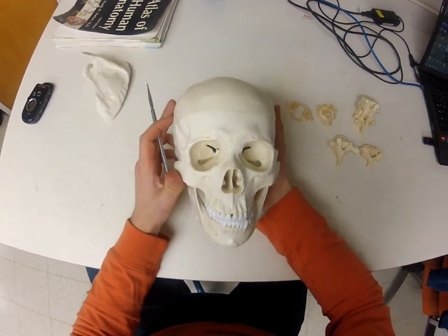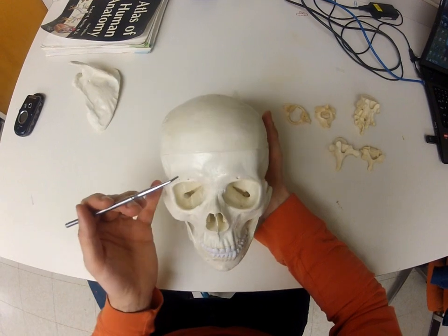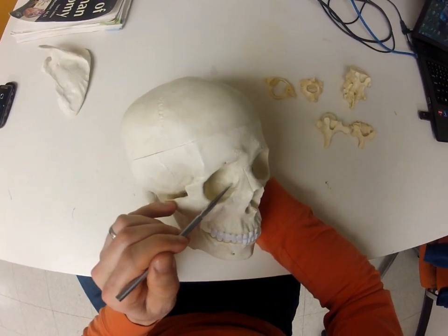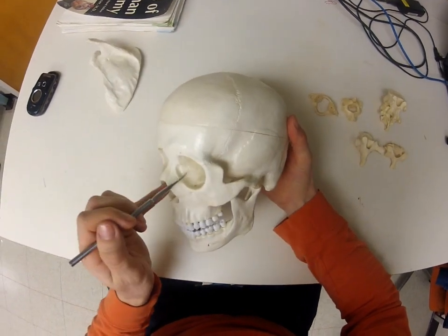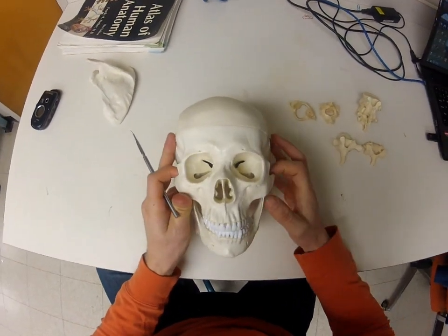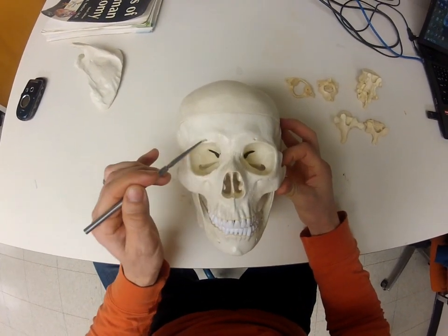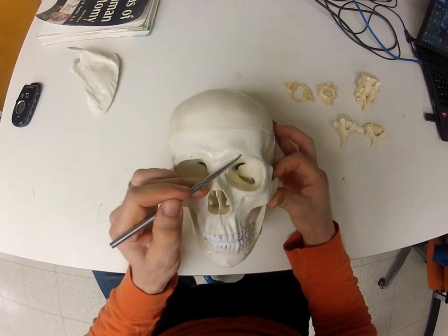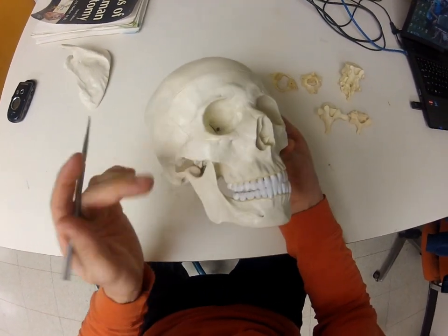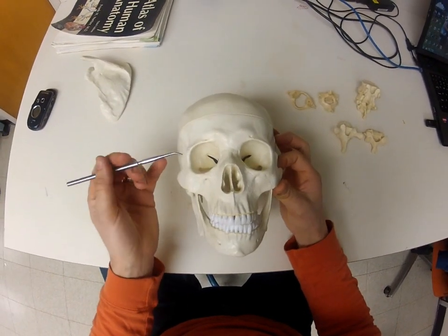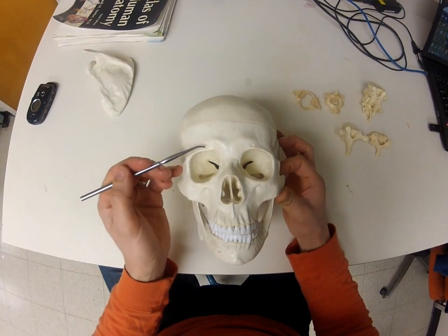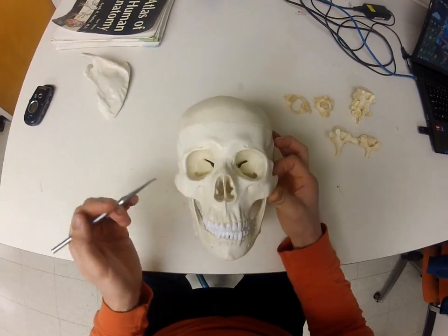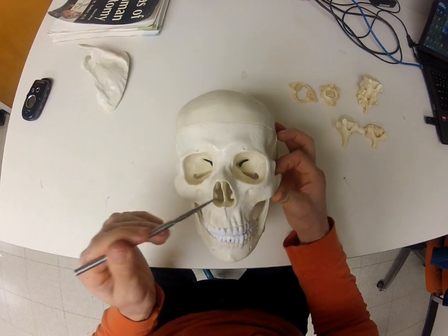At the front we have the nasal bones. Looking into the orbital socket we have the lacrimal bones. We also have openings on the front of the skull: two above the orbital sockets - the supraorbital foramen, two below - the infraorbital foramen, and two on the mandible - the mental foramen. Branches of the trigeminal nerve emerge through these: the ophthalmic branch, the maxillary branch, and the mental branch. Inside the nose we can see a plate going up and down - that's the perpendicular plate of the ethmoid bone.